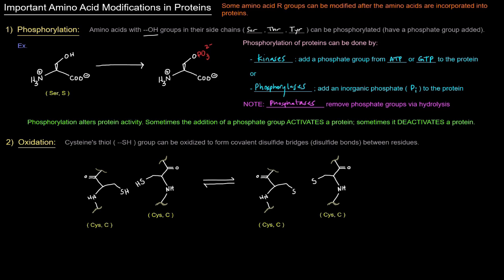Next up, oxidation. Basically cysteine's thiol groups or the SH groups, they can be oxidized to form covalent disulfide bridges or disulfide bonds between cysteine residues. Here I've got two cysteine residues on the left and you'll notice these little squigglies here. That's just an indicator that there's more to the peptide chain than just these cysteines. You can imagine this as being part of like a protein or something.